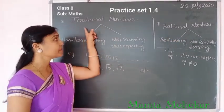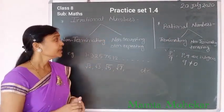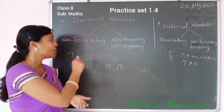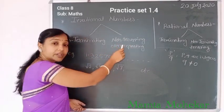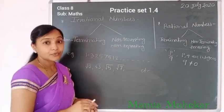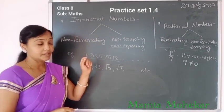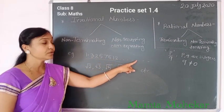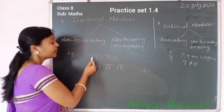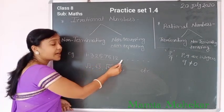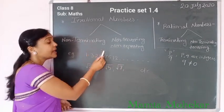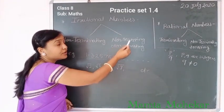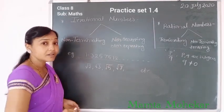In this video we see irrational numbers. Irrational numbers means the numbers which are non-terminating and non-recurring. Non-recurring means non-repeating form of number is called irrational numbers. For example, 1.32575... and so on. These digits are non-stop, that means non-terminating, and the sequence of digits does not repeat again and again, meaning non-recurring. So this number is called an irrational number.